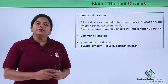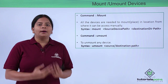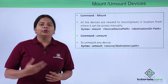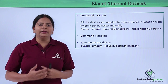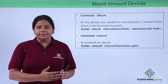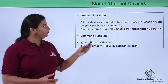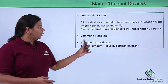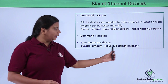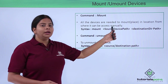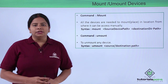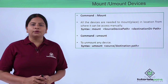If you have already mounted a partition or device and now want to unmount it — for example, to remove a DVD — you cannot remove the device unless you unmount it first, because the system will show the device is still busy. To release it, you use the 'umount' command. For umount, you can specify either the source or the destination that was used while mounting the device.